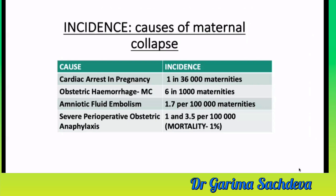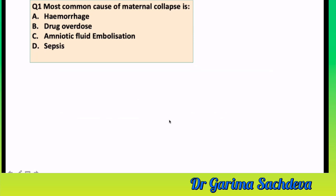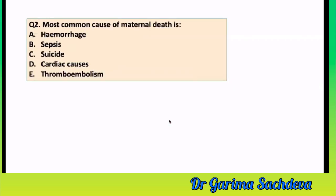Regarding incidence: hemorrhage is the most common cause with around 6 in 1,000 pregnancies. Cardiac arrest has an incidence of 1 in 36,000 maternities. Amniotic fluid embolism is even rarer at 1.7 per 100,000 maternities. Severe perioperative obstetric anaphylaxis has an incidence of 1 to 3.5 per 100,000. The most common overall and indirect cause of maternal death is cardiac disease, and the most common direct cause is thromboembolism.